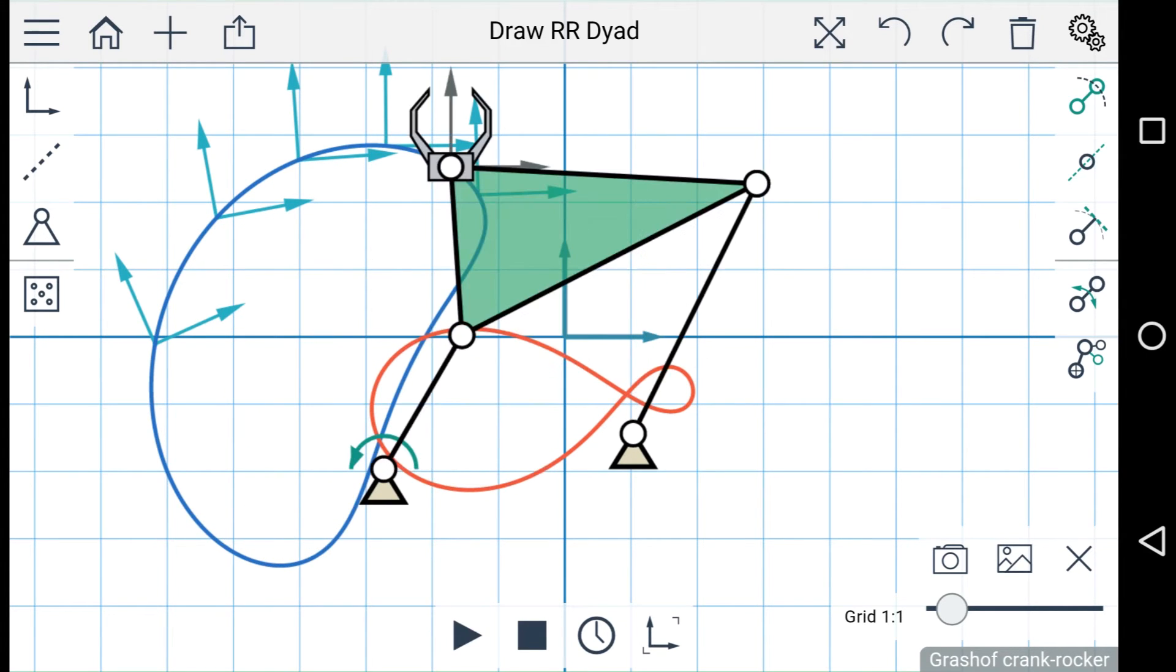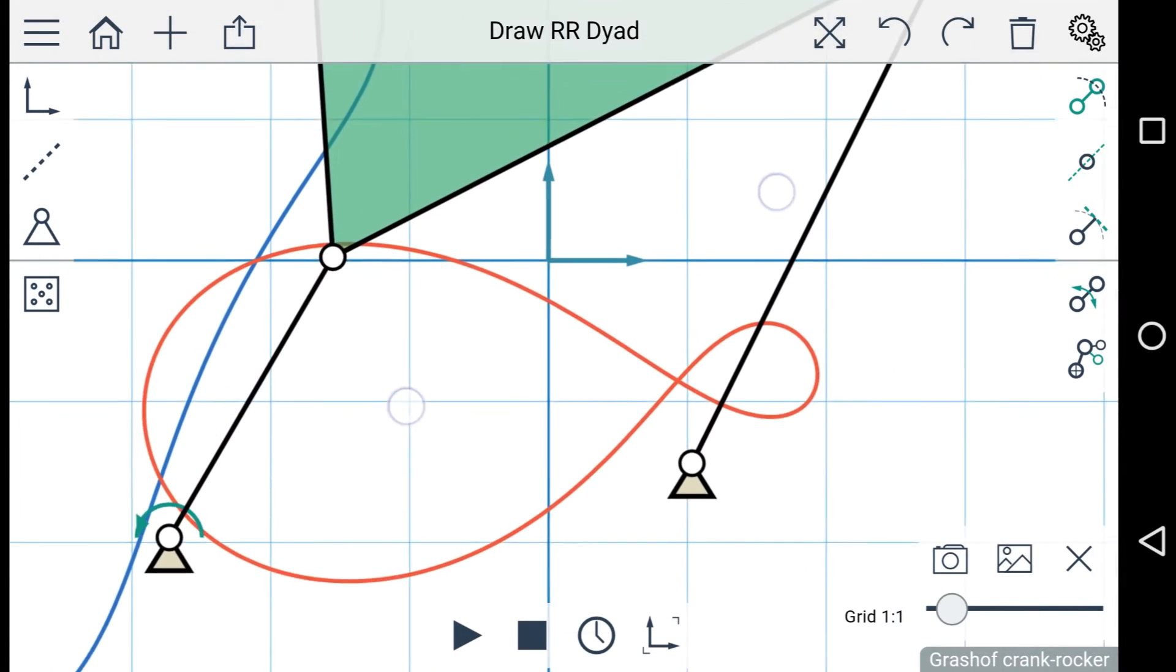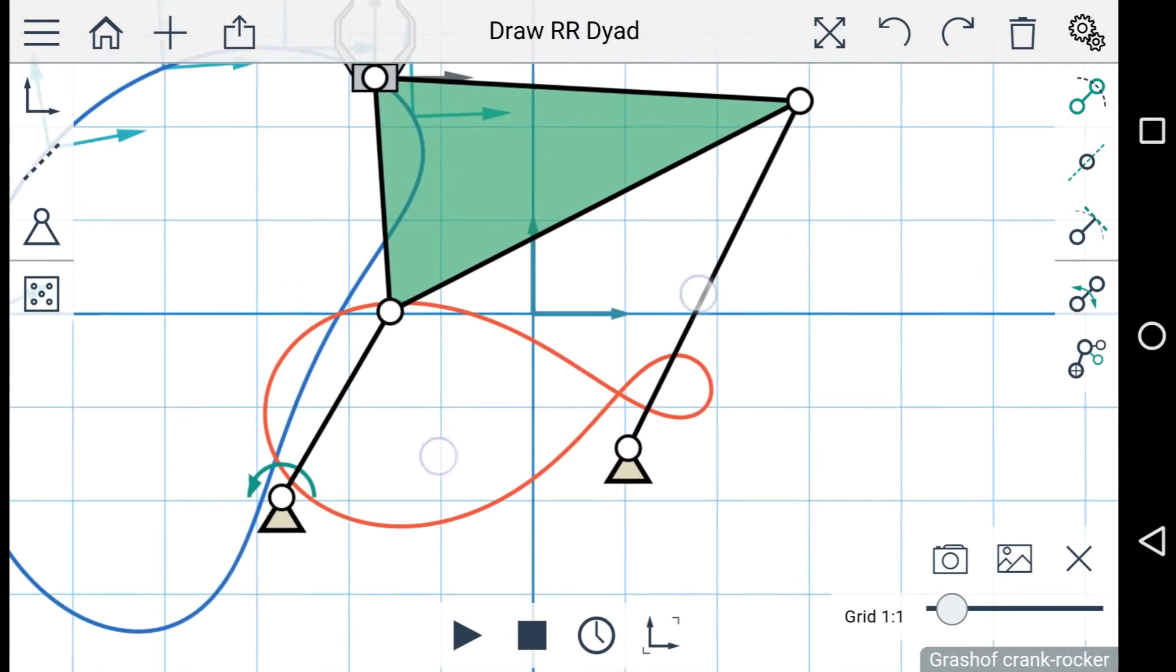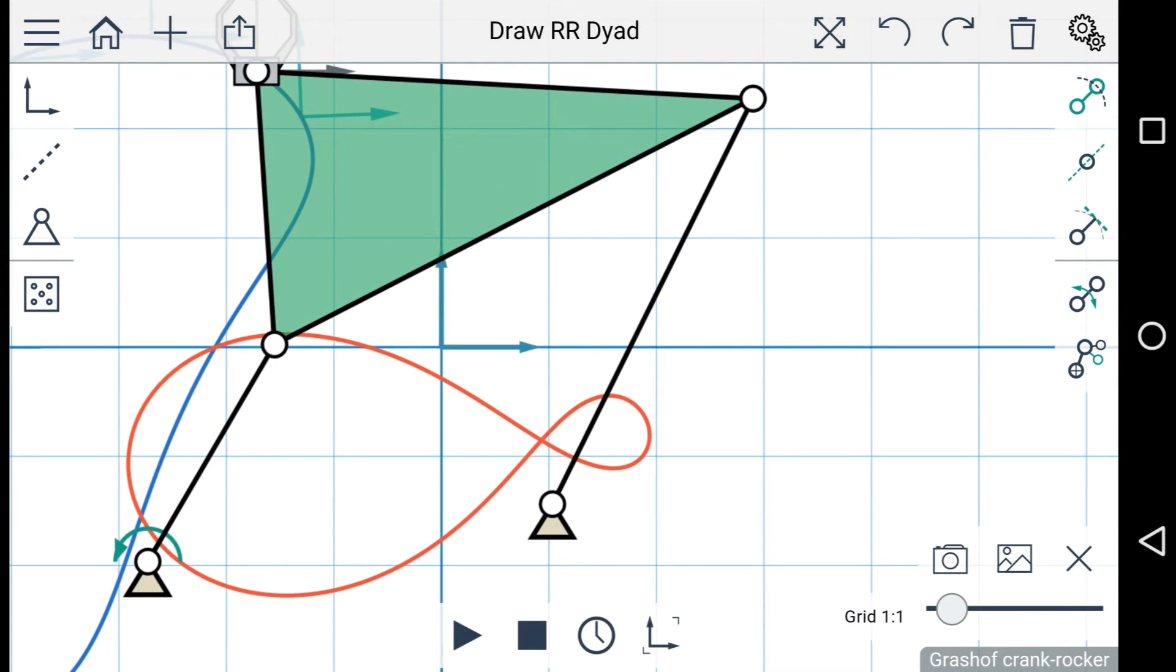You can pan and zoom around the workspace using two fingers. Just pinch to zoom, or drag to pan. If you want to reset the view, there's a button to do that on the menu bar at the top.